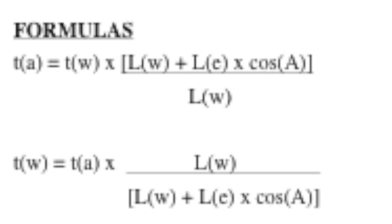The second formula determines the torque wrench setting Tw. That equals the actual applied torque TA times Lw in the numerator, divided by the quantity (Lw + LE × cos A) in the denominator. As you can see, the denominator is always greater than or equal to the numerator. So when the extension angle is different from 90 degrees, you'll always have a torque wrench setting that is less than the actual applied torque on the barrel nut.